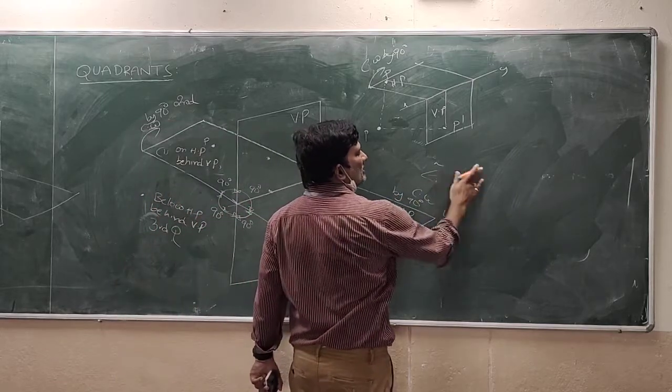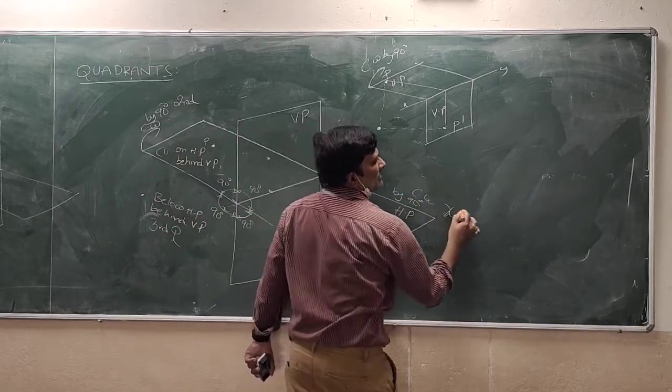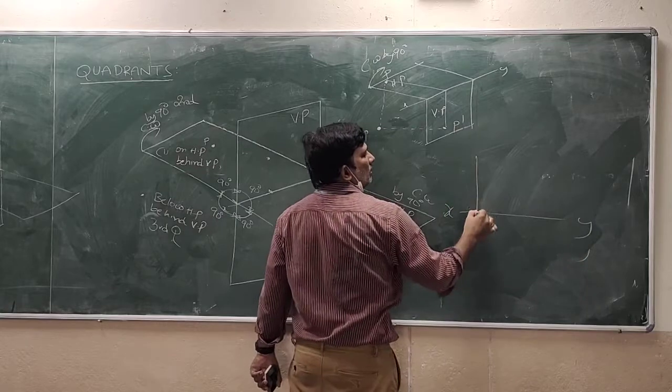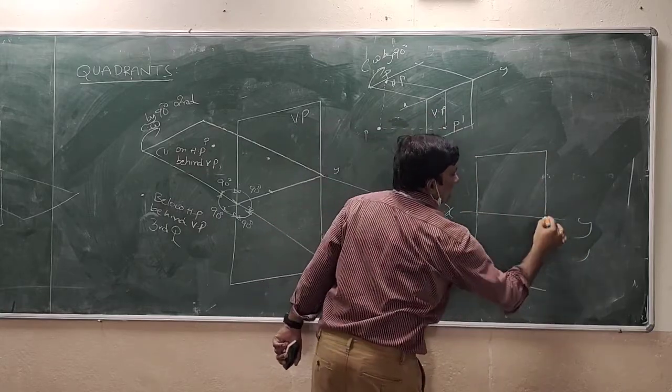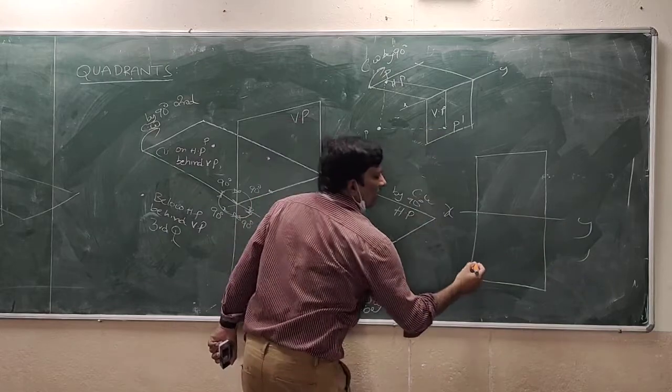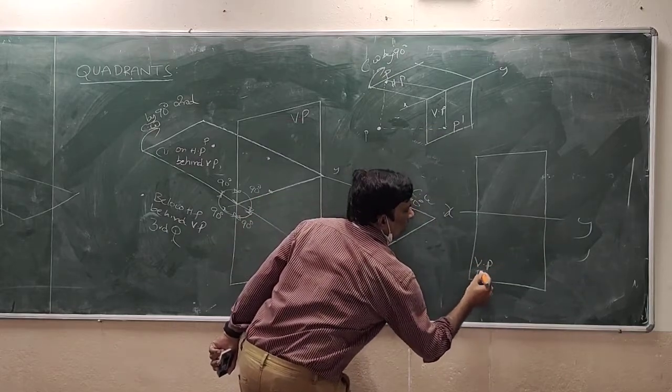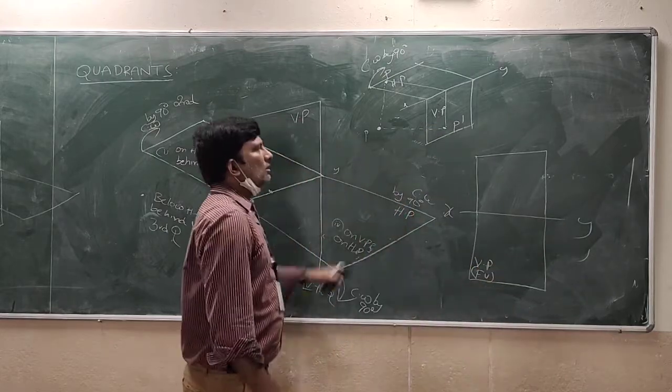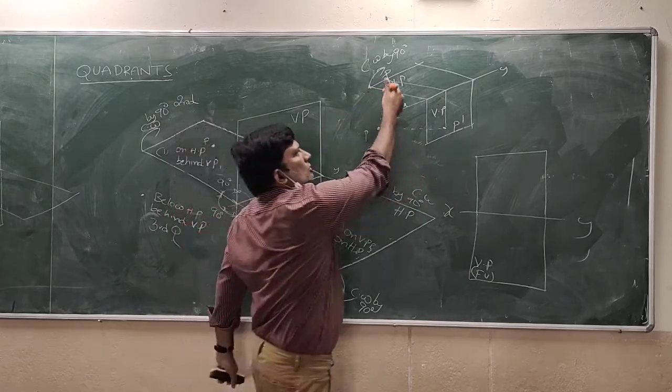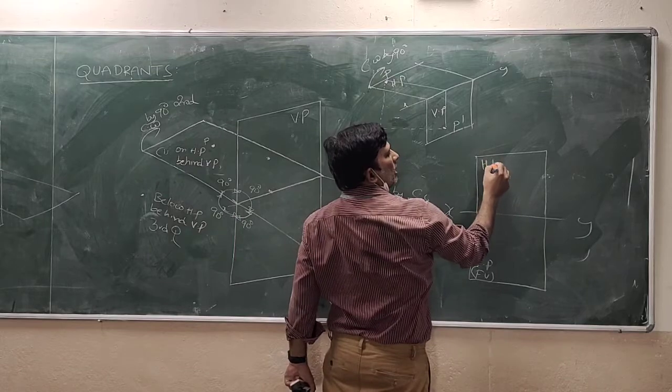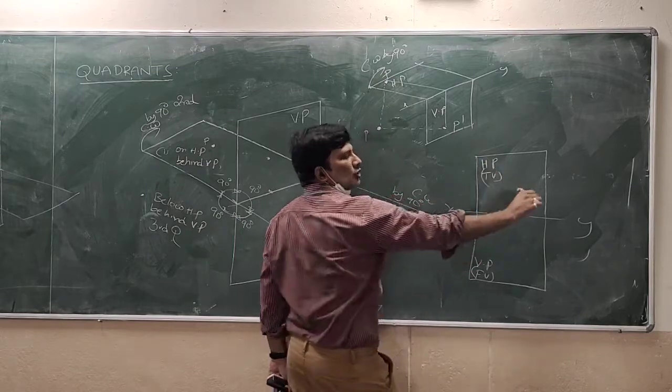Now see the two-dimensional representation. This is our XY reference line, and this is the vertical plane. What I will get - this is not constant, it is moving in the clockwise direction. So this is the horizontal plane, and I will get the top view.